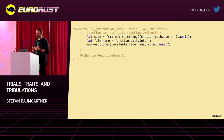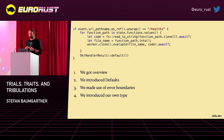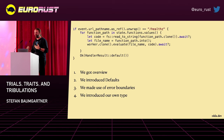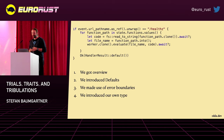So what did we achieve? We introduced defaults, we made good use of error boundaries with the question mark operator, and we introduced our own types. But that's more of our refactoring story — we learned that we need to work with files and code, we learned that we can send HTTP responses back, and we learned that errors can happen. So we learned a little bit about the domain of the function, and we can apply this knowledge to all the other parts.